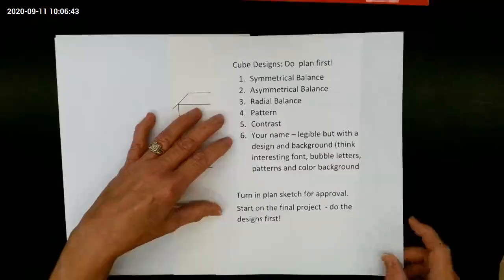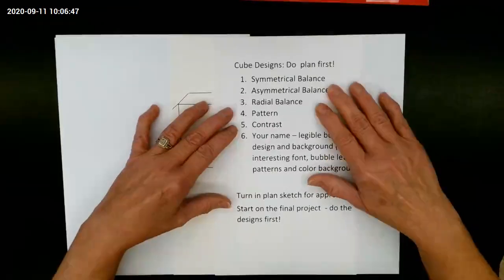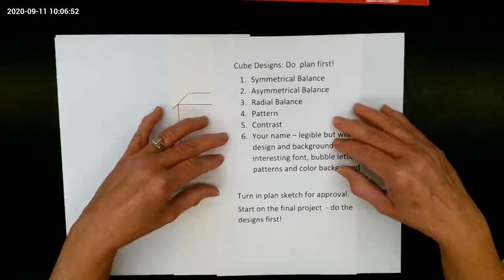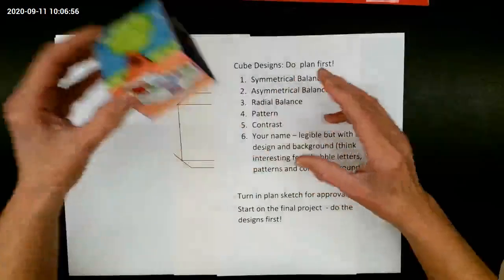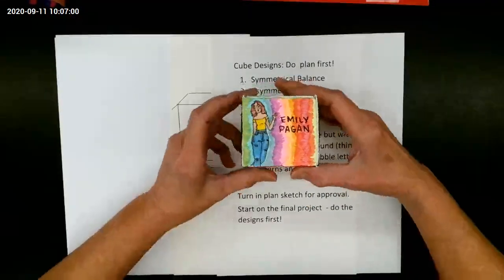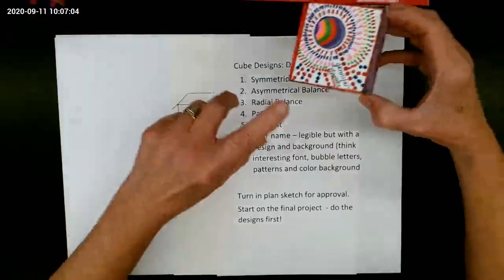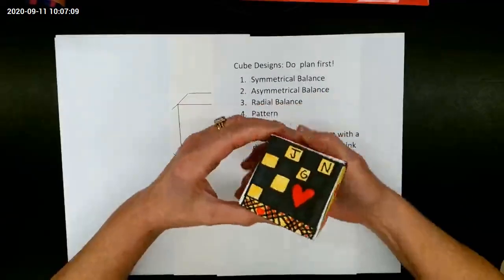You're going to use symmetrical balance, asymmetrical balance, radial balance, pattern, contrast. And one side just has to be your name in some sort of design. Maybe you want to put your name in the clouds or you want to simply put it next to your self-portrait. You can put it off to the side on a pattern. You can add your initials.